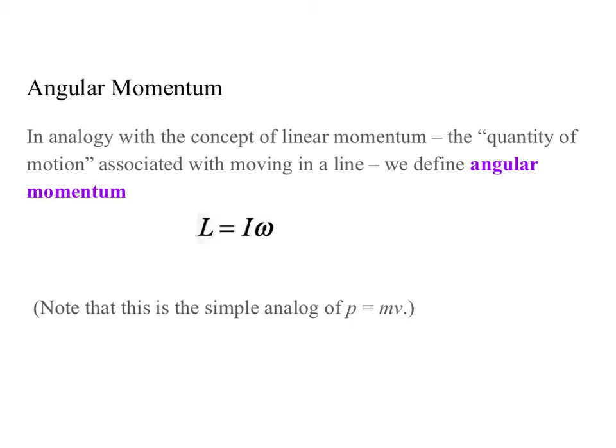In direct analogy with the concept of linear momentum, i.e. the quantity of motion associated with moving in a line, we define angular momentum. We use the symbol L, and L equals I omega.